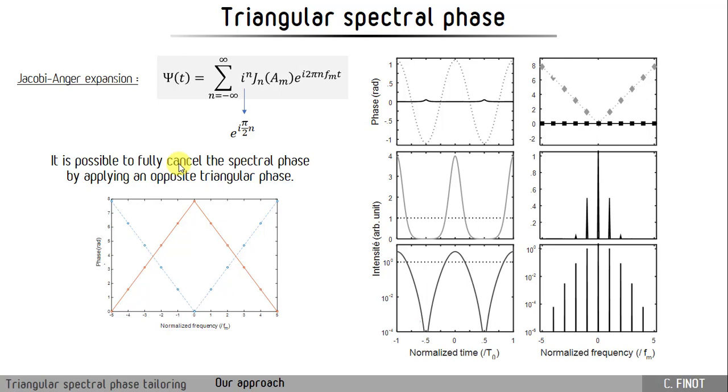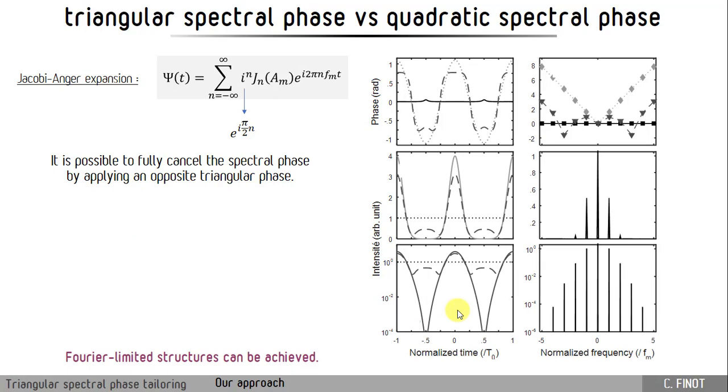This is what we are trying to do. We have here an example for an initial amplitude of the phase modulation that is around one radian. And we will see that when we cancel perfectly this spectral phase by using a triangular spectral profile, or a profile made of pi over two phase shifts, what we obtain is a very nice pulse, with an excellent extinction ratio, as we can see here when we plot the result on a log scale. These are Fourier-limited structures. And if we compare this to the result that we have using a parabolic spectral phase, we can see that we have really improved the quality of the pulse. We have removed the sidelobes, and we have a much higher extinction ratio.